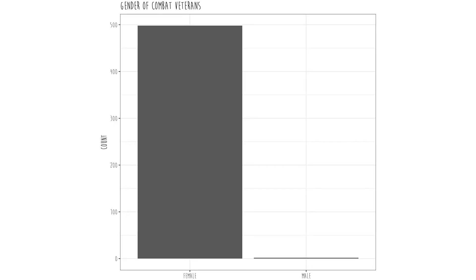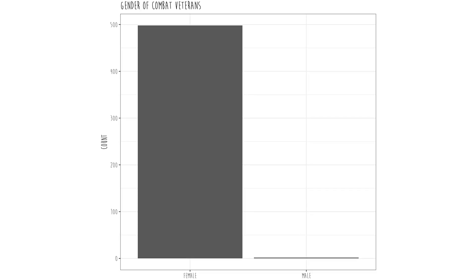And then we have role reversals. In this situation, we have a bunch of combat veterans we've sampled, and we see that there are almost 500 females and only about 20 males. Up until recently, females weren't even allowed in combat — so obviously somebody messed up the coding and accidentally called females males and males females. Sometimes when you read a dataset into a program like SPSS, it converts names to ones and zeros, you forget which is which, mislabel them, and then you're screwed. Make sure you look at the univariate distributions and confirm they match what you think the dataset should look like.